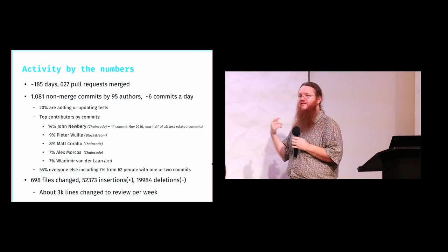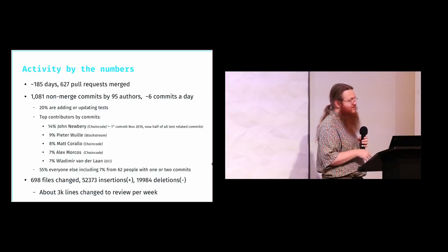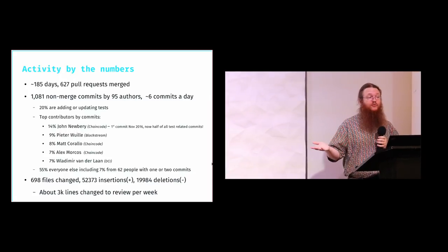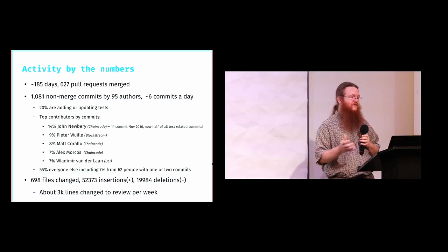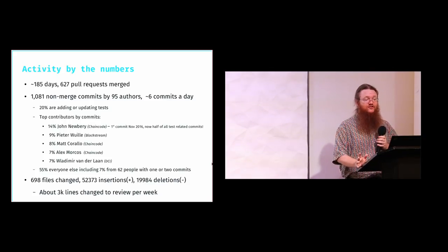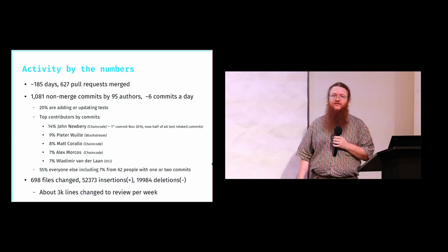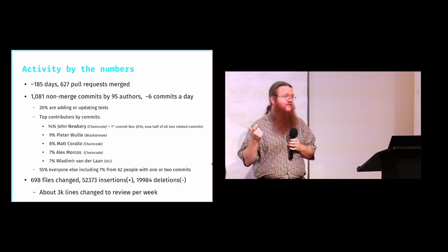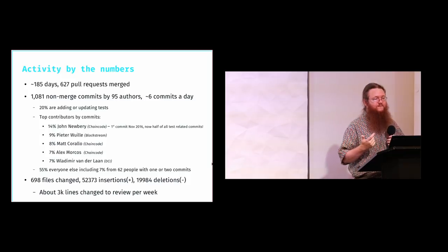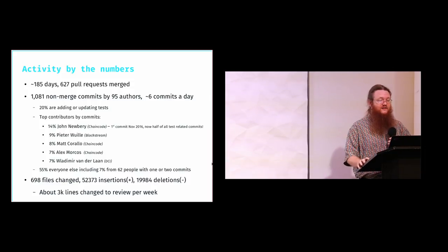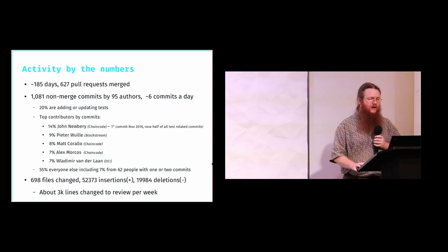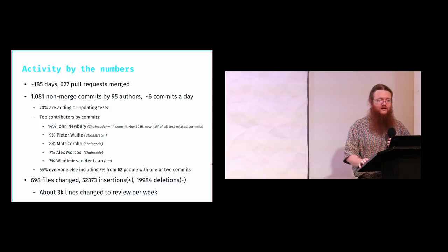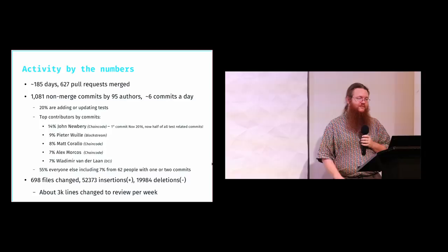Some raw numbers on Bitcoin development activity: over the last 185 days — the development period for 0.15 — there were 627 pull requests merged on GitHub, containing 1,081 non-merged commits by 95 authors, which comes out to 6 commits a day. One interesting thing about 0.15 is that 20% of the commits are test-related. A lot of those came from John Newberry, a relatively new contributor at ChainCode, whose first commit was in November 2016 — he was responsible for half of all test-related commits and was the top committer.